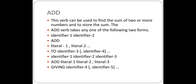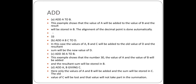A second general form is: ADD literal-1, literal-2, literal-3 GIVING identifier-4, identifier-5. So there are two forms in the ADD verb — one using TO and one using the GIVING option. These are the two general forms of the ADD verb.